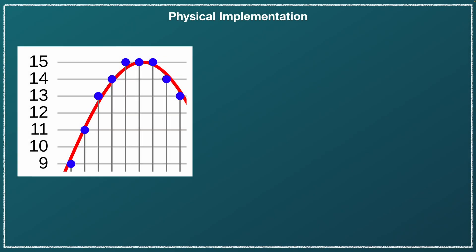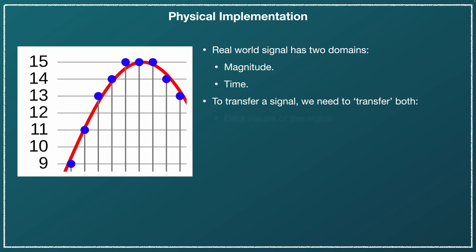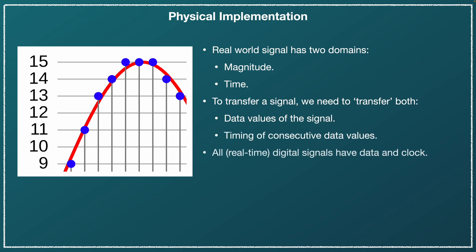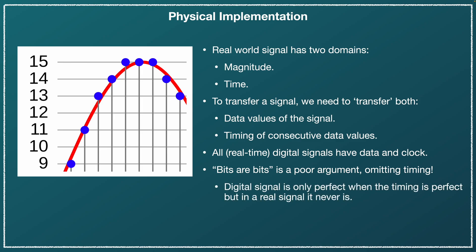We've talked about how the data is formed in PCM and DSD signals, but a real-world signal always has two sides: the magnitude — the data value — and time. To transfer data, we need to transfer the data value but also the correct timing for those values. That's why all real-time signals have data and clock. In hi-fi you hear arguments that bits are bits and all digital signals are the same. That's a poor argument because you're only considering one side of things. A digital signal is only perfect when the timing is perfect, but in a real signal it never is. The deviation in timing is jitter.